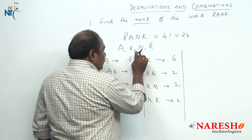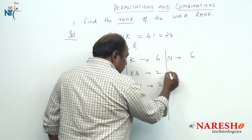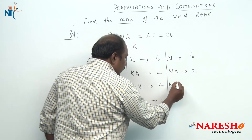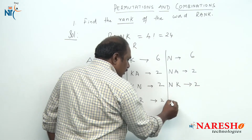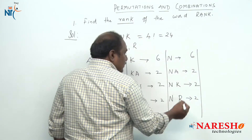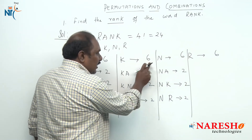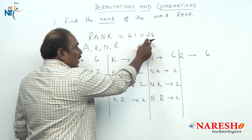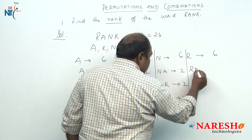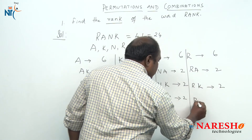Next, we have arrangements which start with N — they should also be 6. In this six, the first two are the arrangements which start with NA, the next two are the arrangements which start with NK, and the next two are the arrangements which start with NR. Coming to the last, we have six arrangements which start with R: two with RA, two with RK, and two with RN.